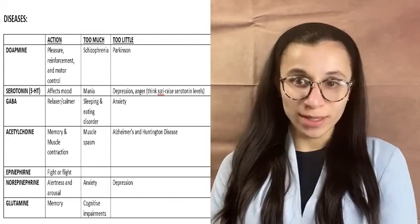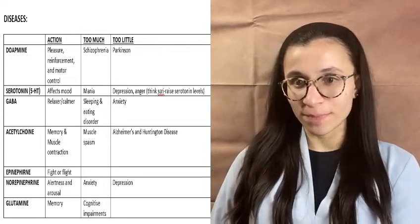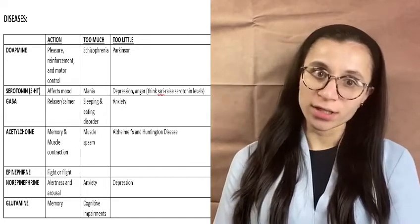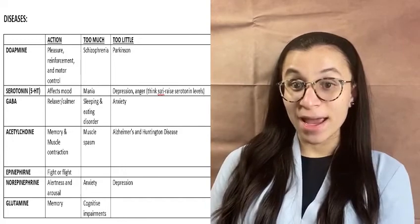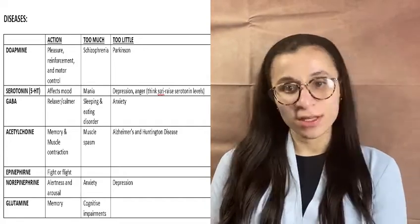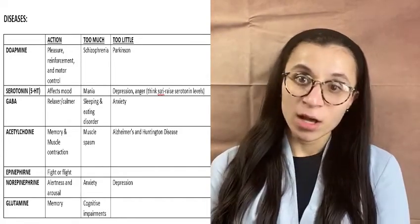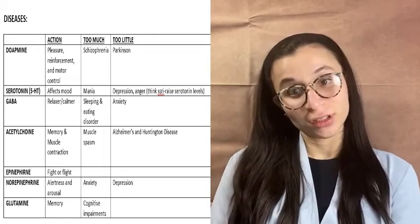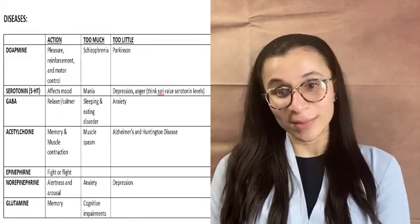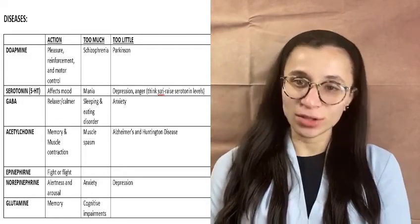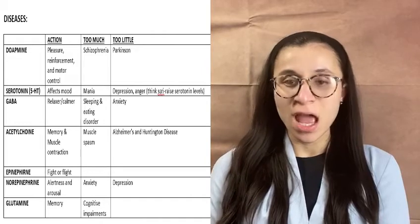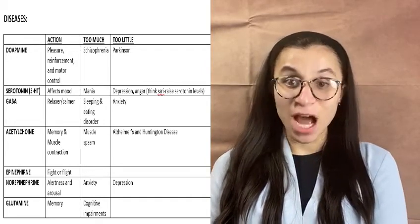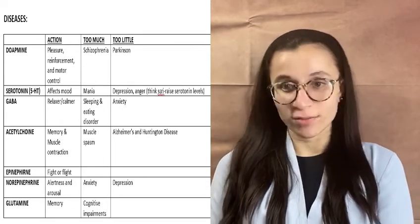Last but not least is glutamate. Glutamate is involved in learning and memory. How I like to remember it is that whenever people are studying, they always end up going on Instagram and seeing glute workout pictures instead of learning — so every time you try to learn, you end up seeing the 'glutamate' pictures. If you have any impairment or deficit in glutamate, it's going to cause cognitive impairment.